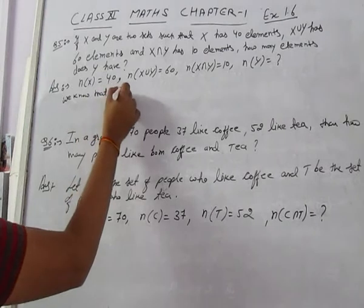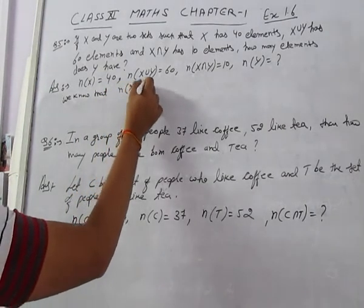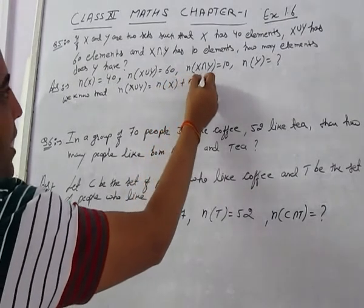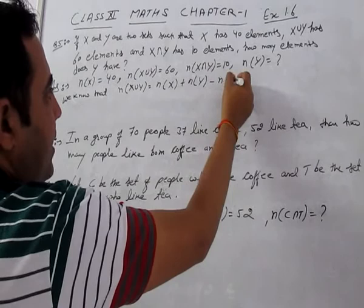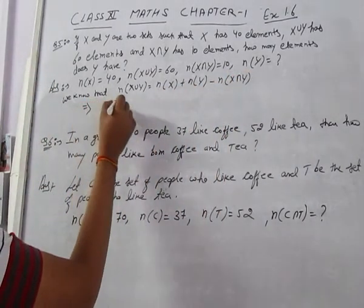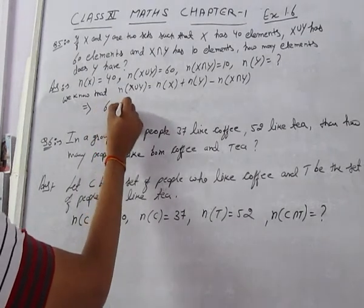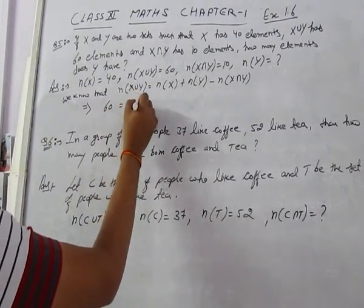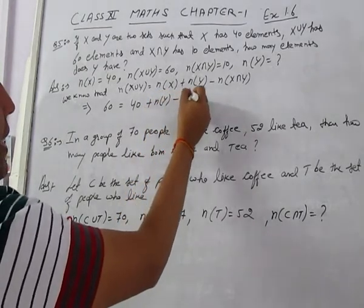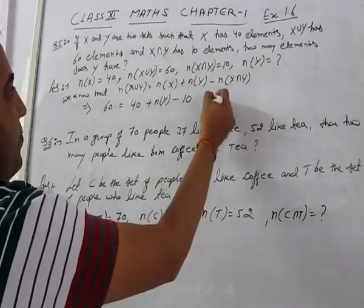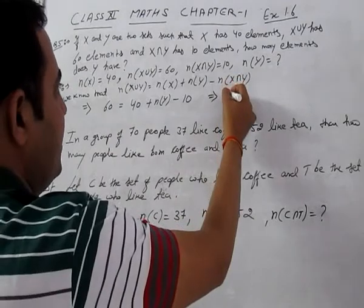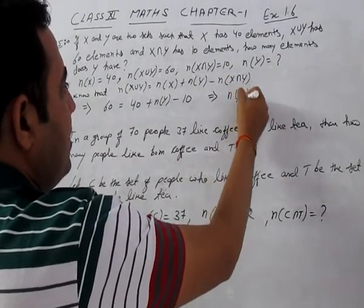Using the formula: n(X∪Y) = n(X) + n(Y) - n(X∩Y). Putting all the values: 60 = 40 + n(Y) - 10. So 60 = 30 + n(Y), and subtracting 30 from 60, n(Y) = 30. Therefore Y has 30 elements.